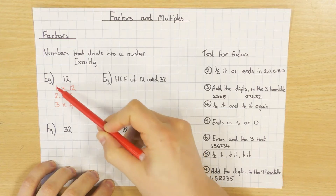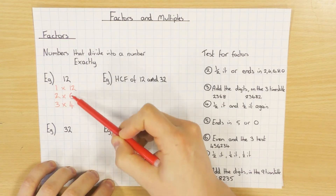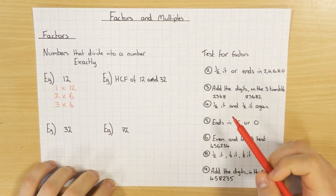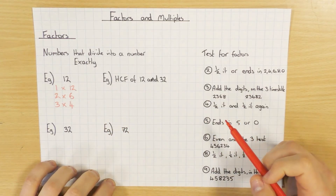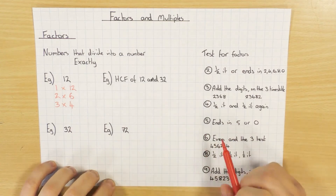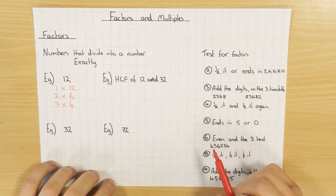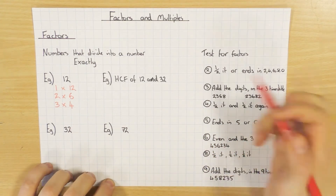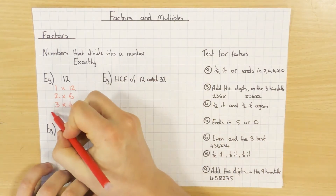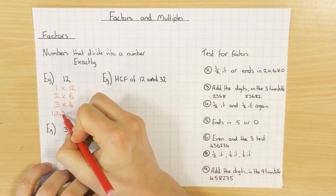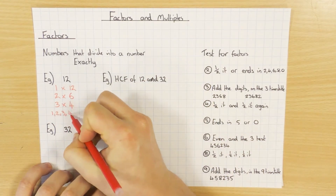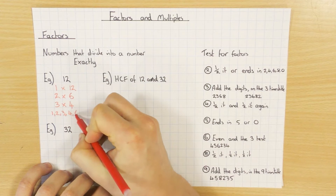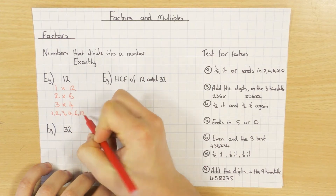So as soon as you start and go back on yourself, you can stop. You don't have to test any more numbers, which is why this method is definitely the best way to go about it. So the factors of 12 are: 1, 2, 3, 4, 6 and 12.